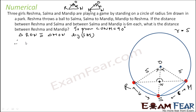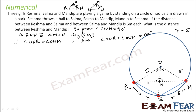Therefore, angle ONR equals angle ONM. But angle ONR plus angle ONM equals 180 degrees as a linear pair. Therefore, both are 90 degrees — angle ONR equals angle ONM equals 90 degrees. So we have proved the first part: this angle is 90 degrees.